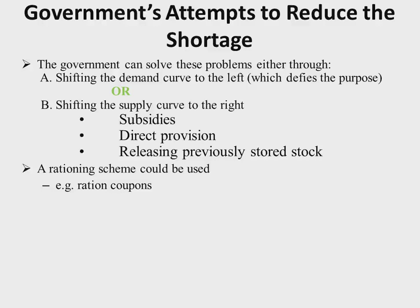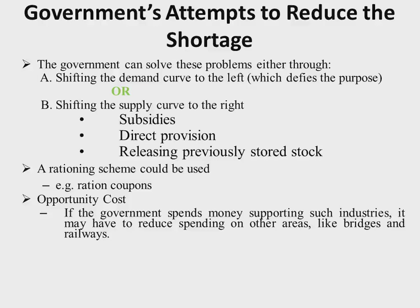There is also an opportunity cost consideration. If the government spends more money supporting such industries through direct provision, it may have to reduce spending on other areas like bridges and railways. Opportunity cost, as discussed in Unit 2, is the value of the best alternative foregone — the amount of something that must be given up in order to produce more of another item.